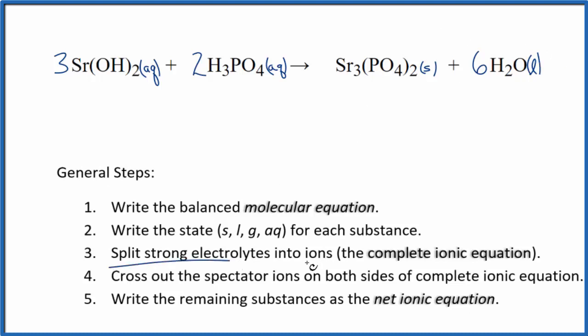Now we can split the strong electrolytes into ions for the complete ionic equation. So strontium is group two. That'll be two plus. The whole hydroxide ion, one minus. Good one to remember. So we have three of these strontium ions. I'll write the states later. Plus we have two hydroxide ions times three. Six total hydroxide ions.